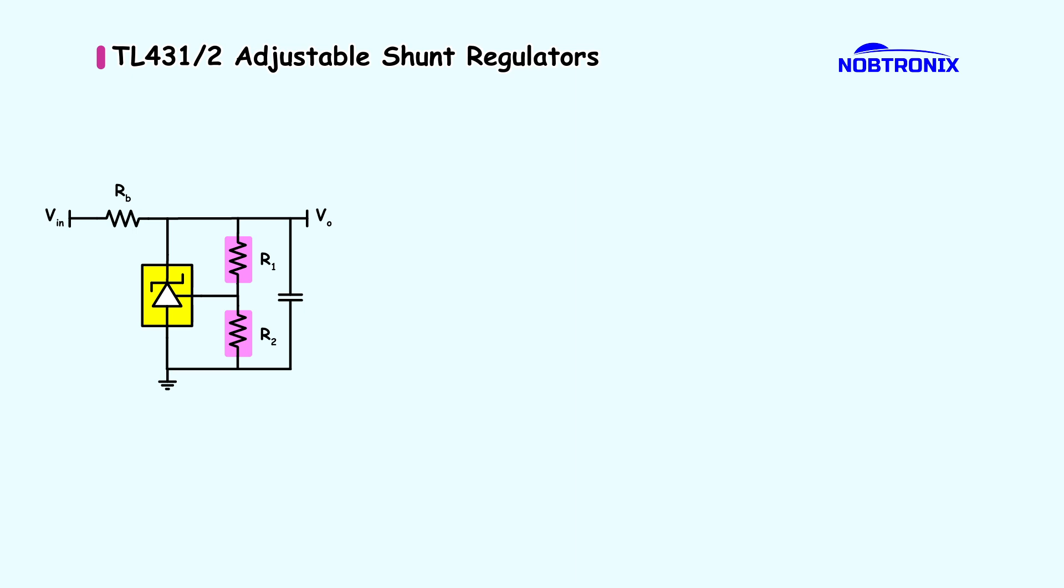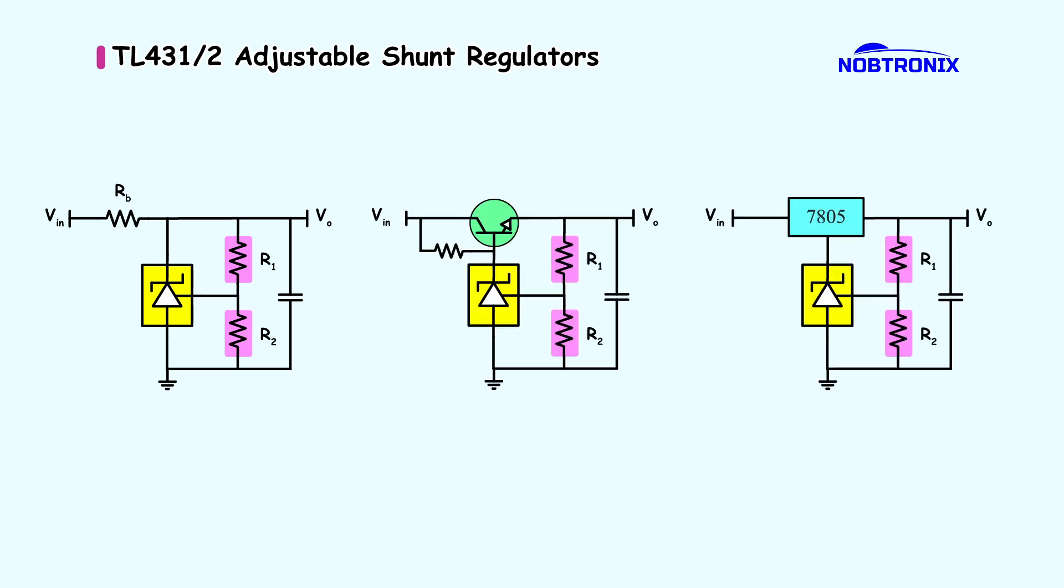By combining TL431 with an NPN transistor or linear regulator like 7805, it's possible to create a precision regulator. The feedback resistors program the desired output voltage.